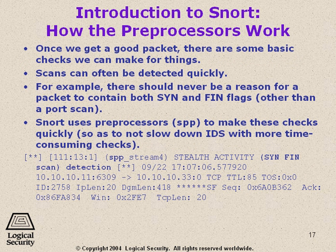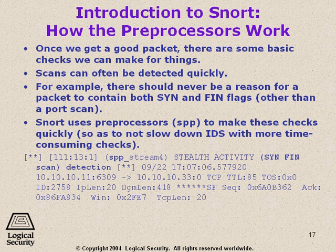How do the preprocessors work? Once we get a good packet, there are some basic checks we can make. Scans can often be detected fairly quickly. You can certainly tell when someone's sending out a lot of SYNs and there are no ACKs being sent back in response. If you saw both SYN and FIN flags on together, you can immediately tell that's obviously a port scan — there's no reason for that to ever exist. Snort uses the preprocessors to make these checks quickly so as not to slow down the entire IDS, filtering out a lot of the initial bad packets before applying a rule set.